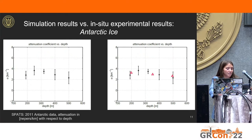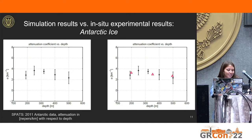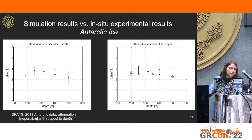Finally, here is my model compared to Antarctic ice. This data is from SPATS, the South Pole Acoustic Test Setup — a really cool project that was a precursor to a neutrino observatory in Antarctica. This team calculated attenuation for horizontal propagation through Antarctic ice with respect to depth. The ice near the surface was slightly warmer than ice deeper down, which is why we see a slight decrease in the pink triangles — that is my data — and the comparison looks pretty decent for Antarctic ice.